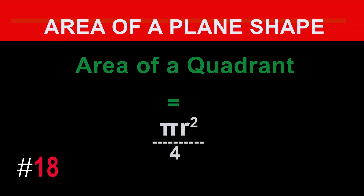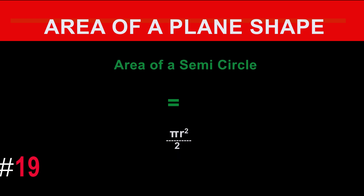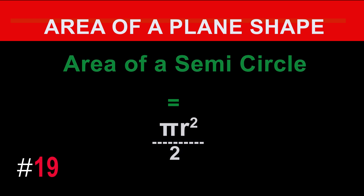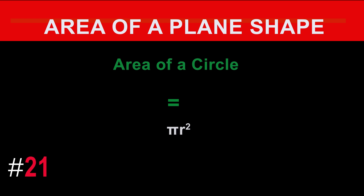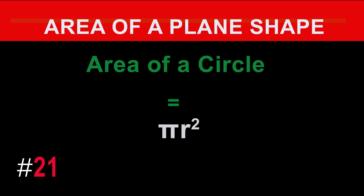The formula for the area of a quadrant is: area equals pi r squared divided by 4. The formula for the area of a semicircle is: area equals pi r squared divided by 2. The formula for the area of a parallelogram is: area equals base times height. The formula for the area of a circle is: area equals pi r squared.